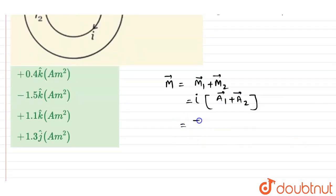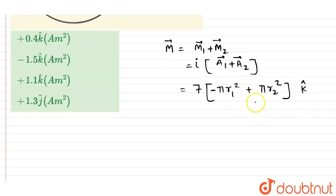Now put the value of i. i is given to us as 7, and the area vectors are π r1 squared. Here we have given that r1 is in the minus k-hat direction, so here it should be minus, plus π r2 squared, and the direction is k-hat.